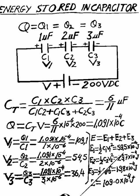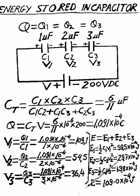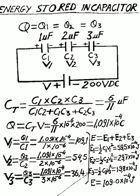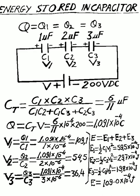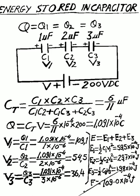E1 equals 59.5 × 10⁻⁴ Joules. E2 equals 29.7 × 10⁻⁴ Joules. E3 equals 19.8 × 10⁻⁴ Joules. Total energy stored in all three capacitors equals 59.5 plus 29.7 plus 19.8, giving E equal to 109.0 × 10⁻⁴ Joules.